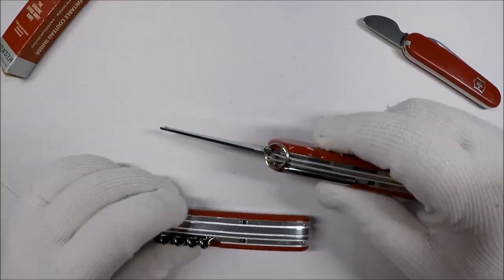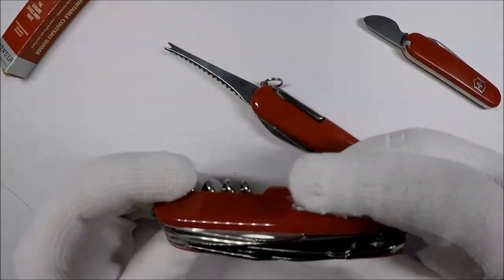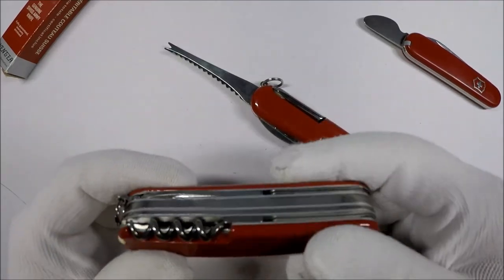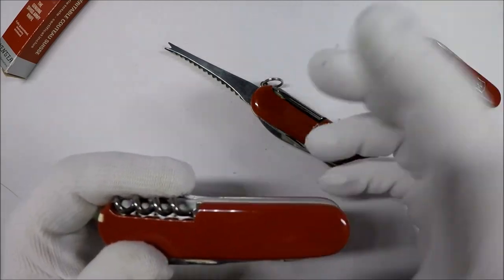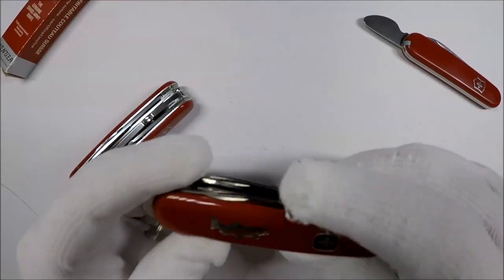So also, I guess another big difference is you have a Phillips head screwdriver here and the angler has the corkscrew. So I don't know. What do you think? It's kind of an interesting knife.